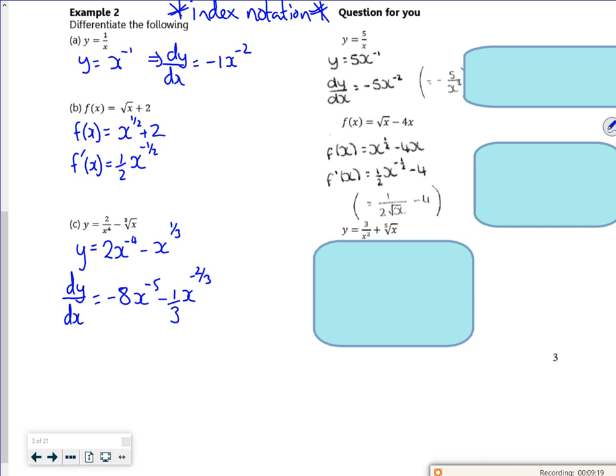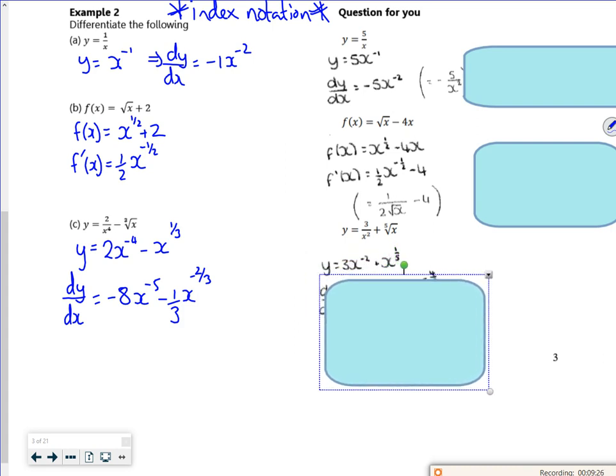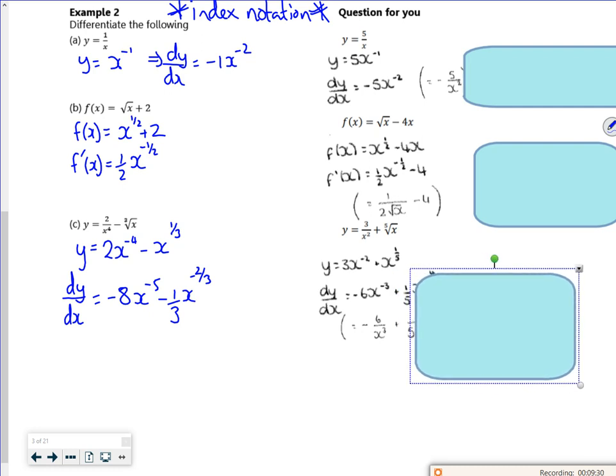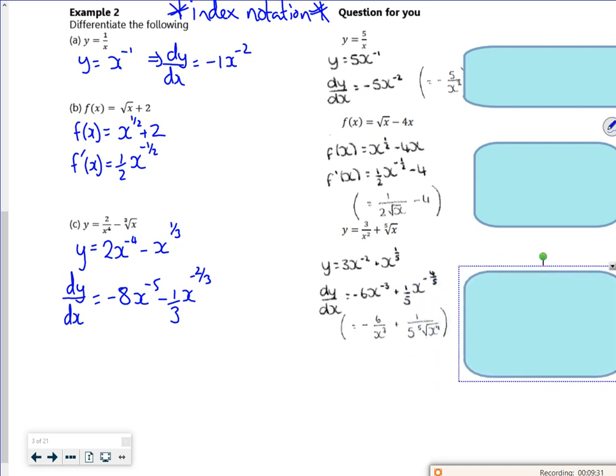You can see they've put them in proper notation as well. We've got 3x to the minus 2, plus x to the fifth, which becomes minus 6x to the minus 3, plus a fifth x to the minus 4 fifths.